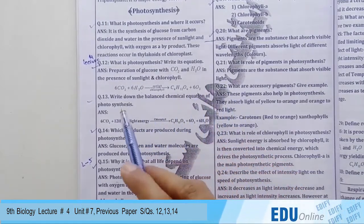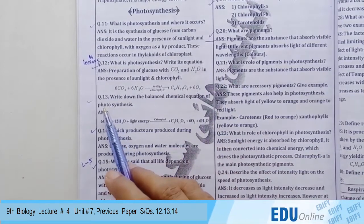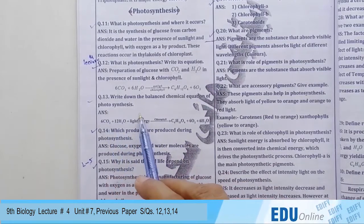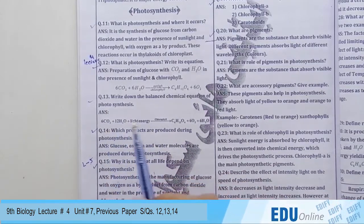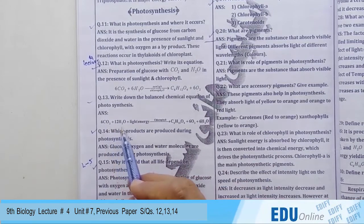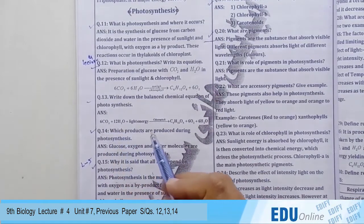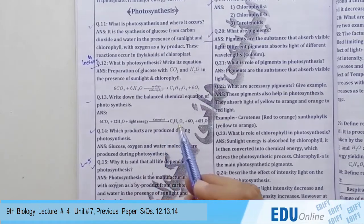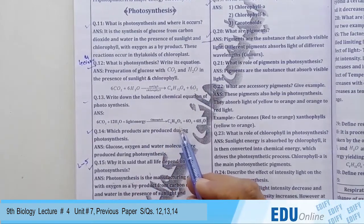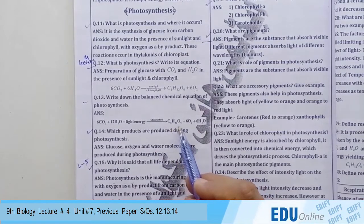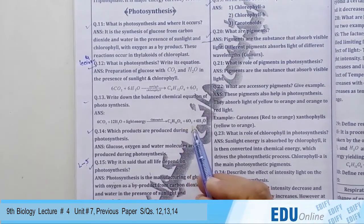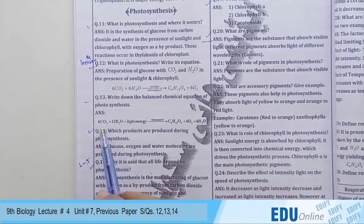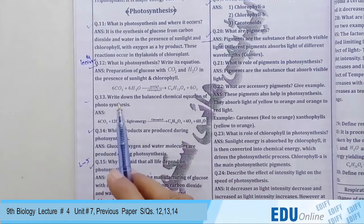Question number 13: write down the balanced chemical equation of photosynthesis. In this equation, carbon dioxide plus water plus light energy in the presence of chlorophyll forms glucose C6H12O6 plus six oxygen plus six water. The numbering is used to balance the equation.